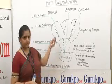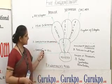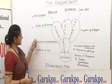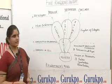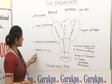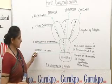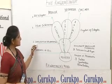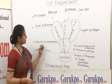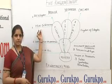According to Whittaker, there are three basic criteria of classification. The first criterion is complexity of cell, the second is complexity of organization, and the third is mode of nutrition.